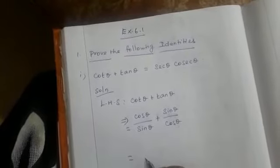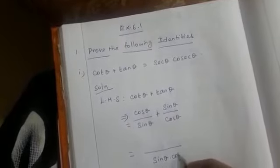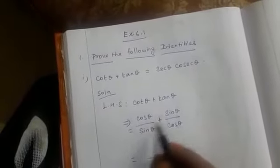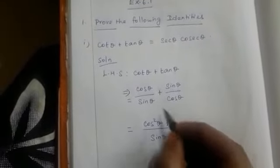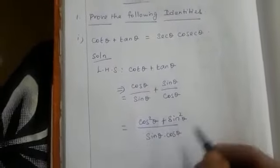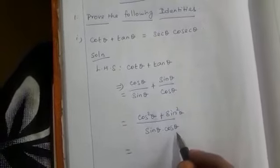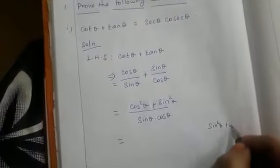Now in the denominator we have sin theta and cos theta, so let us take the LCM. The LCM becomes sin theta into cos theta. Cross multiplying gives us cos theta into cos theta, which is cos squared theta, plus sin theta into sin theta, which is sin squared theta. So the numerator is cos squared theta plus sin squared theta, divided by sin theta into cos theta. We know the identity sin squared theta plus cos squared theta equals 1, so applying this identity the numerator becomes 1.